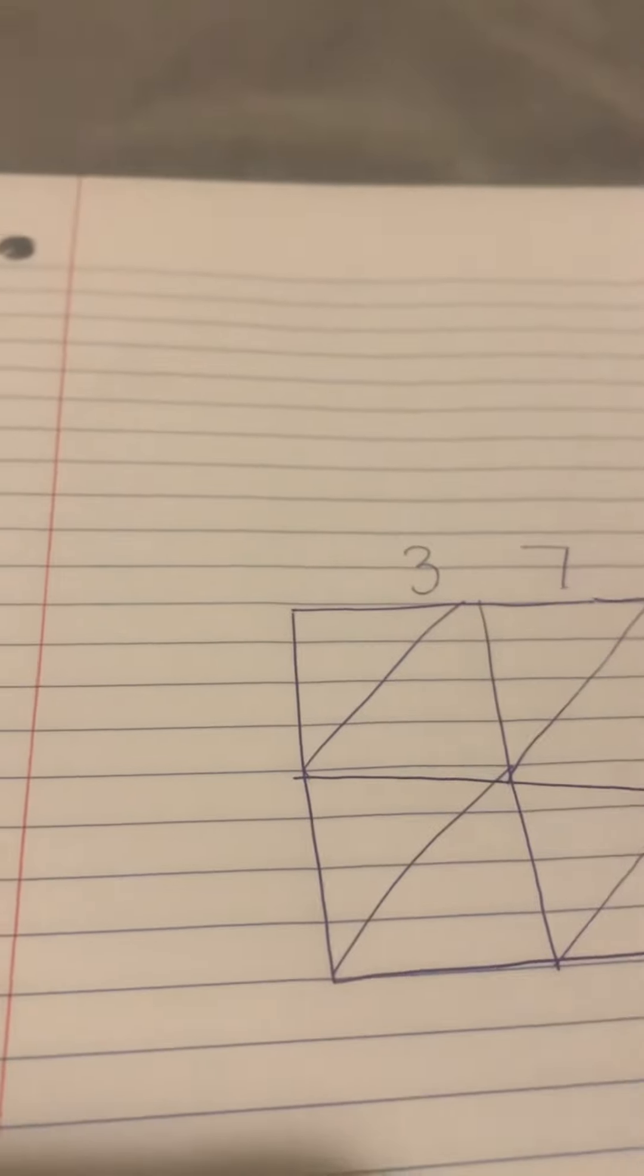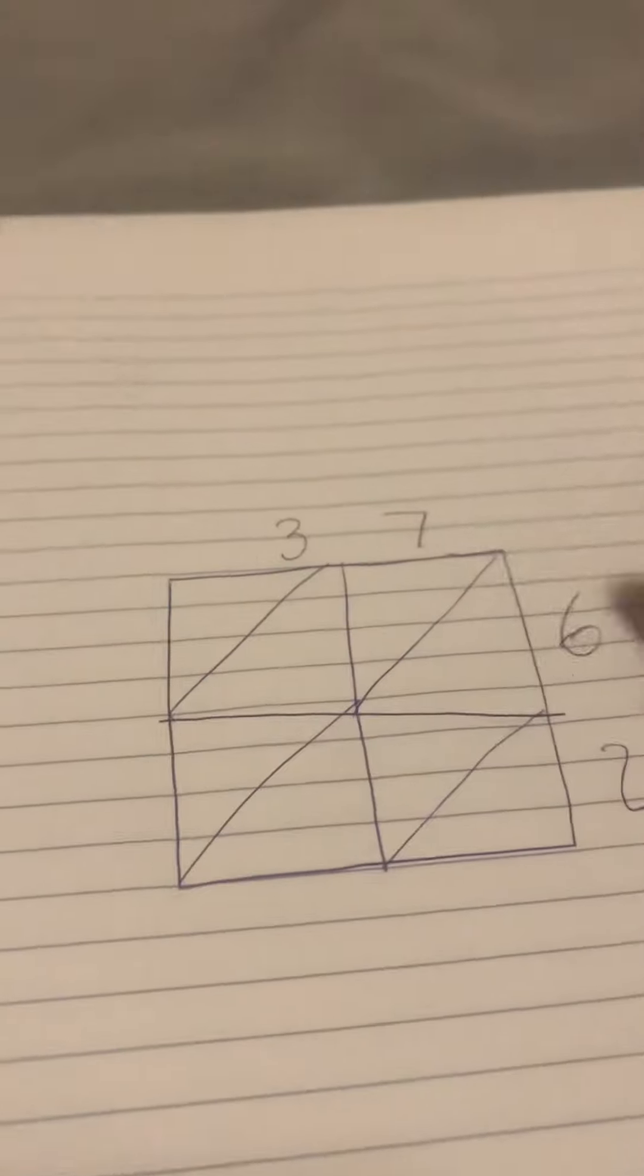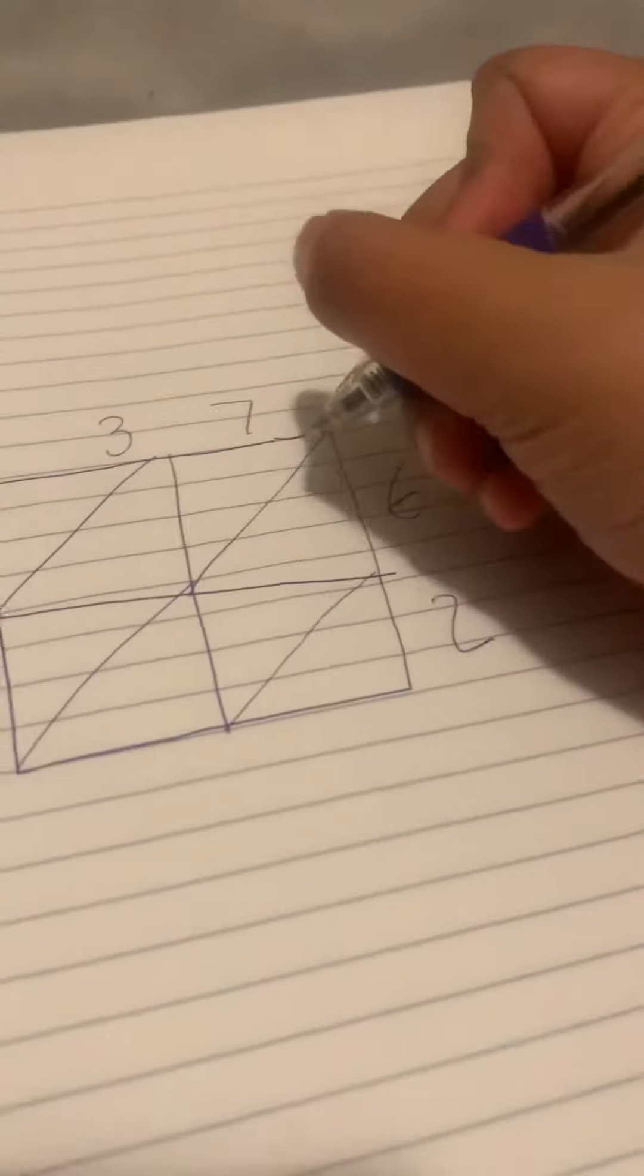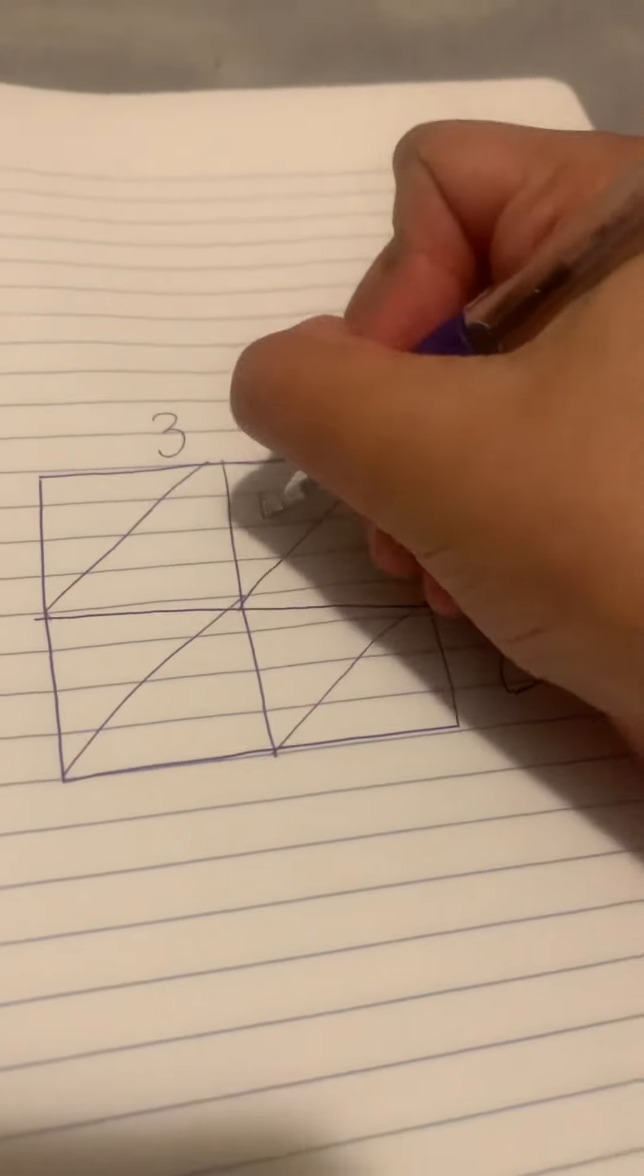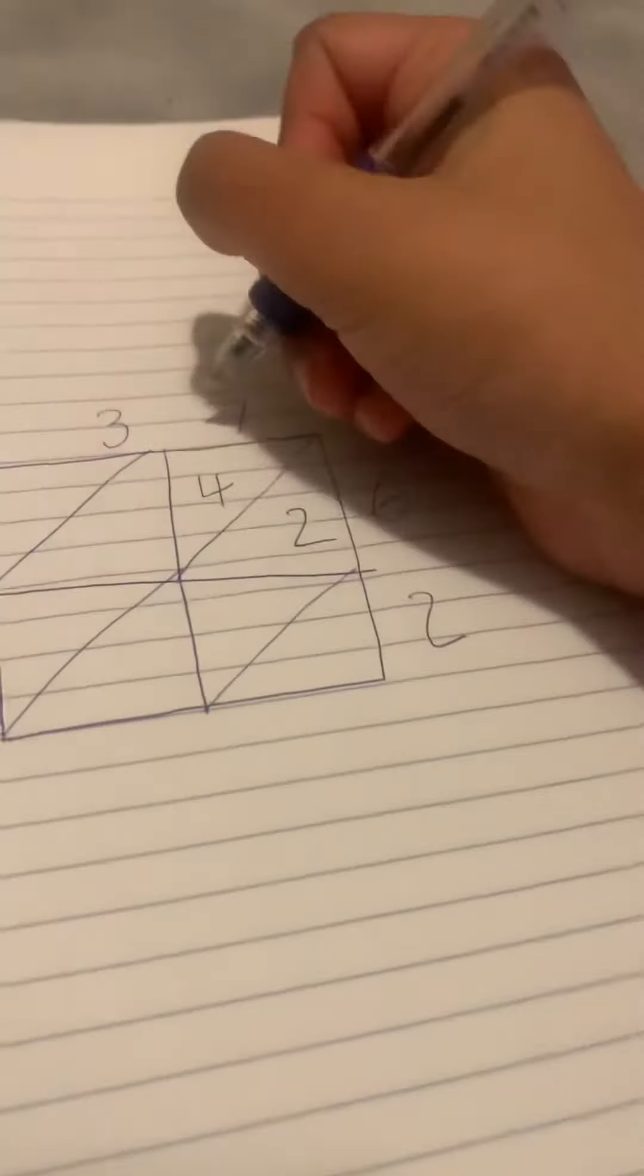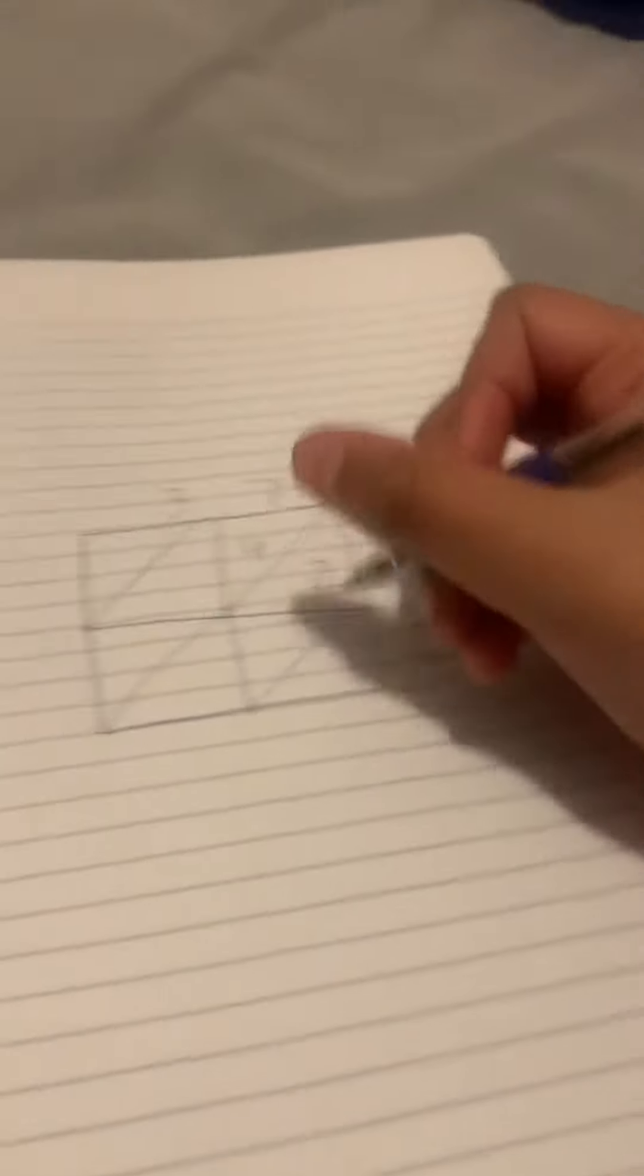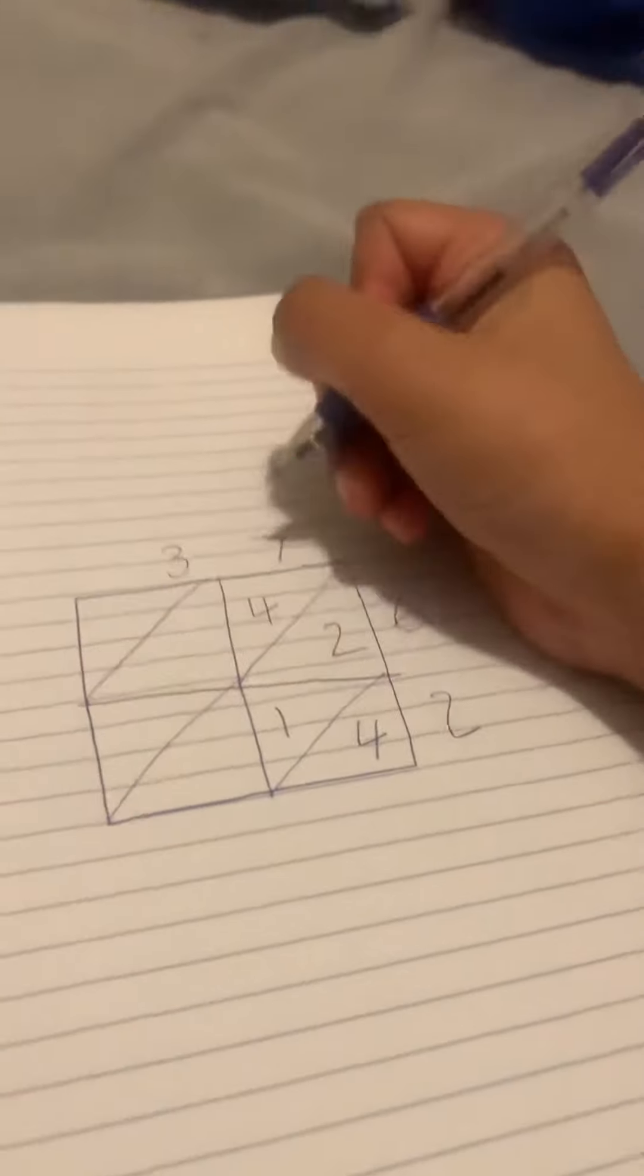So 7 times 6 is 42, so you put the 4 here and the 2 here. 7 times 2 is 14, so I put the 1 here and the 4 here.